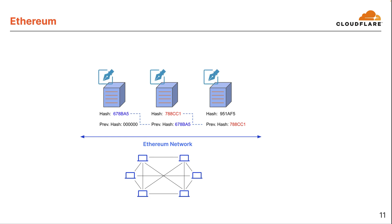Ethereum was the first programmable blockchain in the sense that users could deploy applications on them. There's been others since, but Ethereum was the first to do this. These applications are called smart contracts and can be written in different languages, the most popular being Solidity. As the application is deployed on blockchain, it inherently becomes decentralized as well, and referred to as a decentralized app, or dApp.